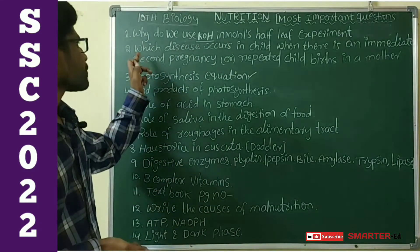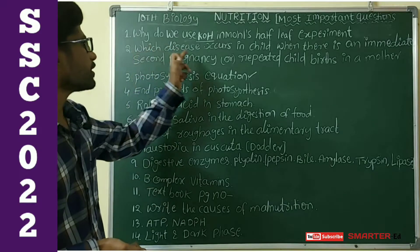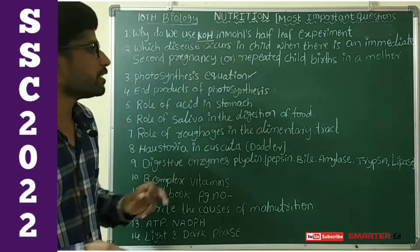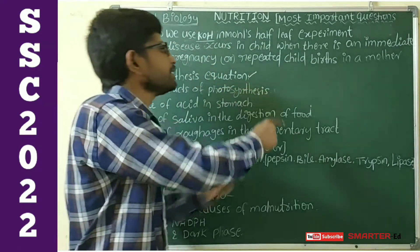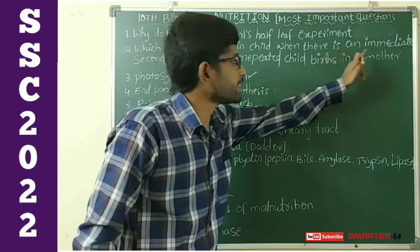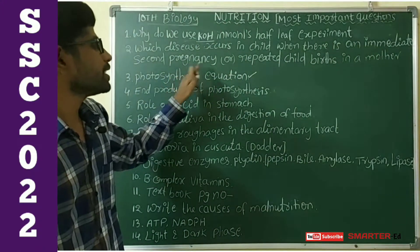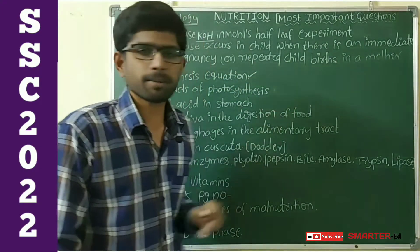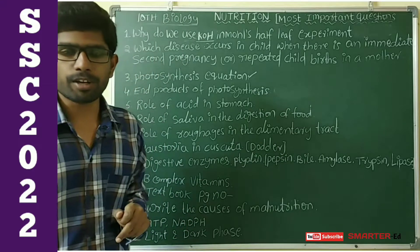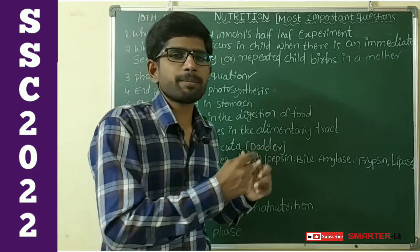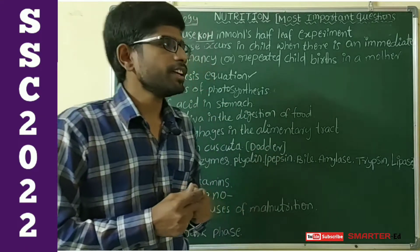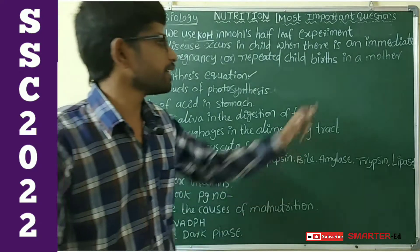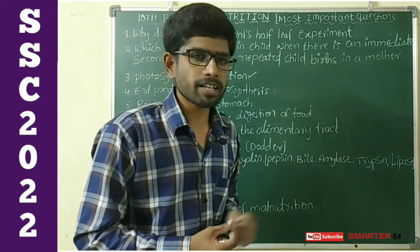The second question: which disease occurs in a child when there is an immediate second pregnancy or repeated childbirth by the mother? This is also a very, very important question. The answer is marasmus.